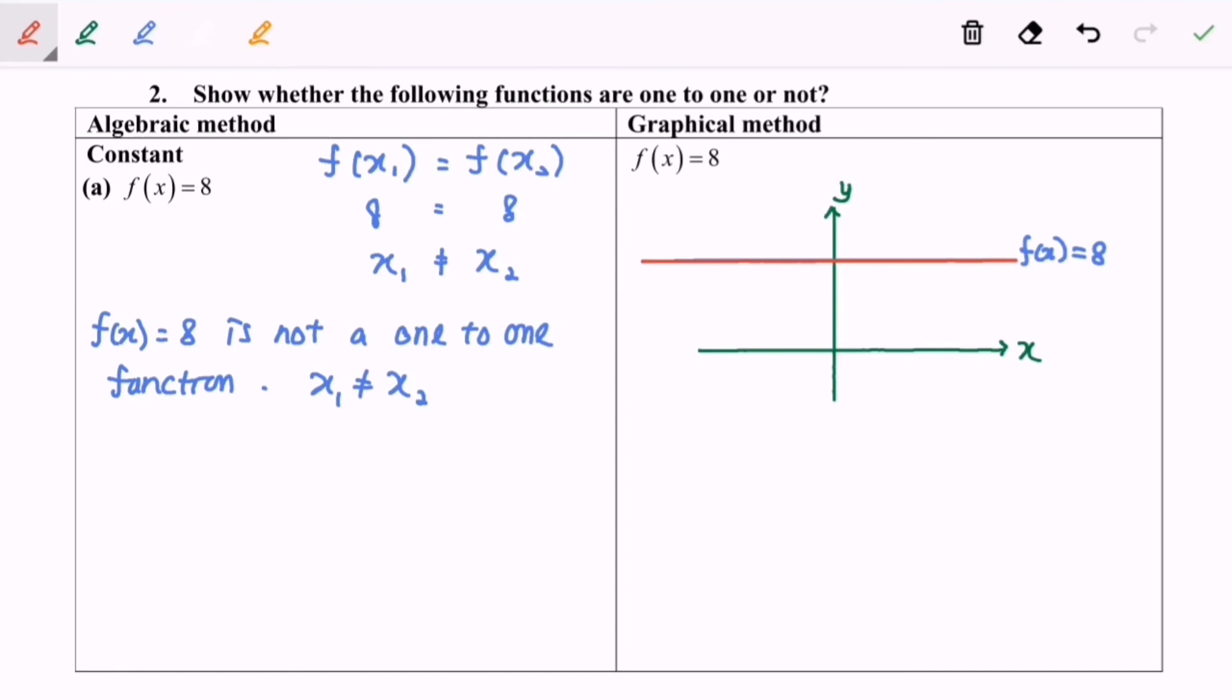So as we can see, the red color totally covers the blue color. So meaning that there is the intersection. So for the conclusion, f(x) equals eight is not a one-to-one function.